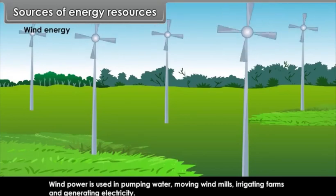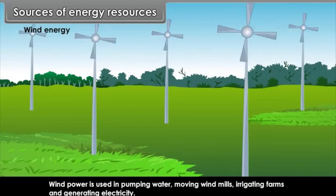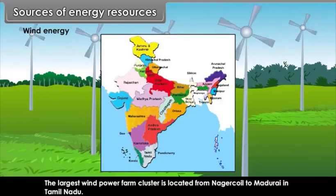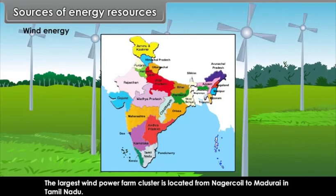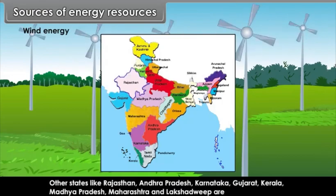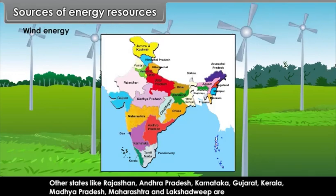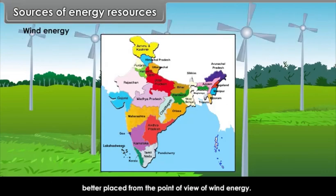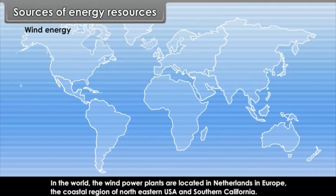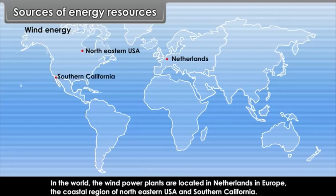Wind power is used for pumping water, moving windmills, irrigating farms and generating electricity. The largest wind power plant in India is located from Nagarkoil to Madurai in Tamil Nadu. Other states well-placed for wind energy include Rajasthan, Andhra Pradesh, Karnataka, Gujarat, Kerala, Madhya Pradesh, Maharashtra and Lakshadweep. In the world, wind power plants are located in Netherlands in Europe, the coastal region of northeastern USA and southern California.